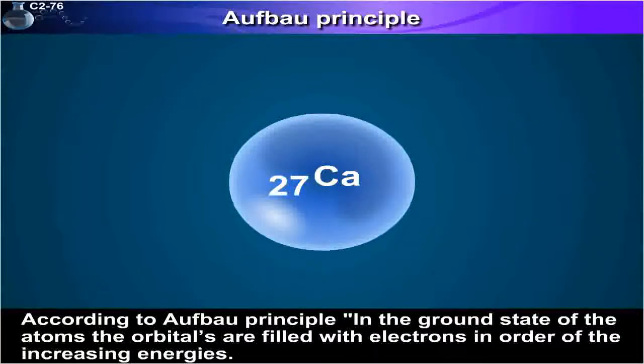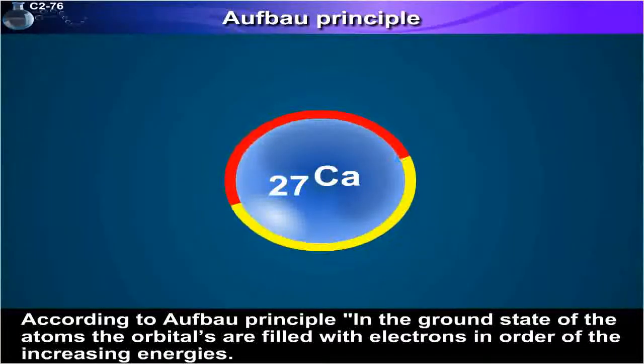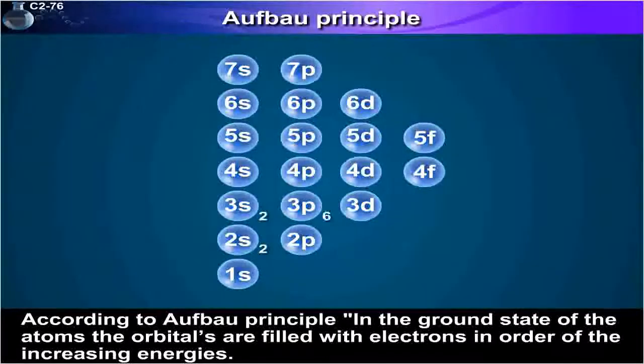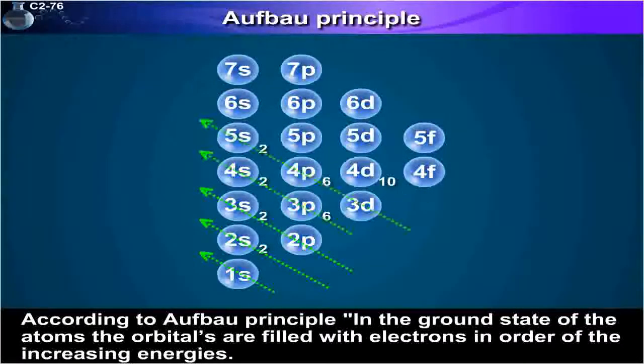According to Aufbau Principle, in the ground state of the atoms the orbitals are filled with electrons in order of the increasing energies.